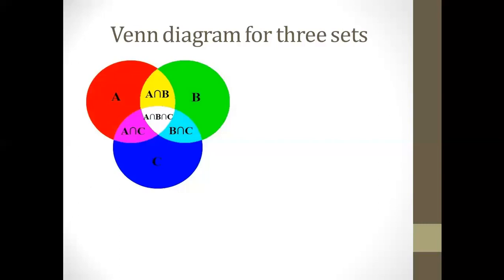The white region — the most important region — is where all three sets meet or overlap, so it represents A intersection B intersection C. Now students, let's draw the Venn diagram for the sets given to us.